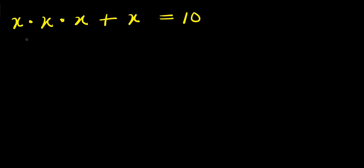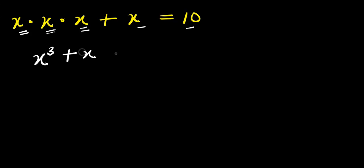Hello. How to solve this equation: x times x times x plus x equals 10, solving for the value of x that satisfies this equation. I can multiply this out: x times x is x squared, times x, this is x cubed plus x equals 10.